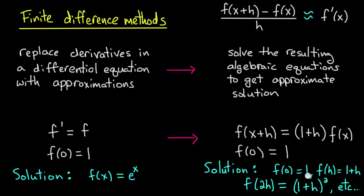So we get a solution which is f(0) equals 1, f(h) is 1+h, that's (1+h) times f(0), f(2h) is (1+h) times f(h), so that's (1+h) squared, etc. And so we would have f at k times h equals (1+h) to the k.